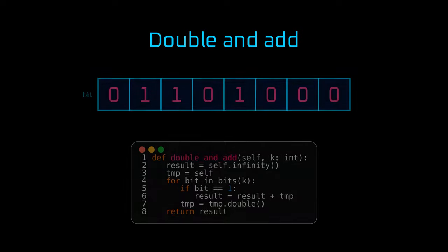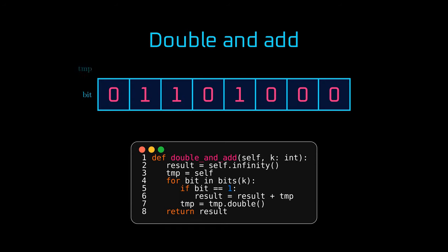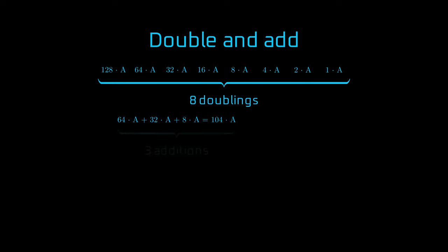There are many highly optimized algorithms for fast scalar multiplication. And perhaps the simplest one is double and add. It iterates over the bits of scalar, calculating subsequent powers of two, and adds together those for which the scalar bit is set to one. So, with this algorithm, we are able to multiply a point by 104 in just eight doublings and three additions.